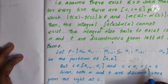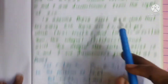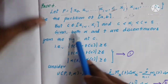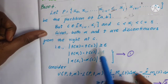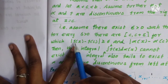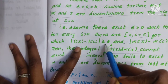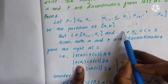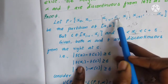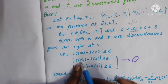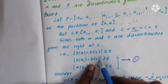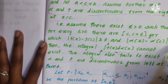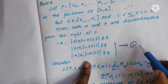So we have c < x_i < c + delta. This is given from the conditions. Both alpha and f are discontinuous from the right at c, so the condition is satisfied. We get |f(x_i) - f(c)| >= epsilon. Since x_i is the point in the closed interval [x_{i-1}, x_i], we have |f(x_i) - f(c)| >= epsilon. This is equation number 1.